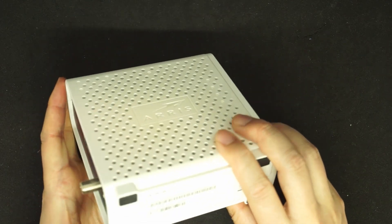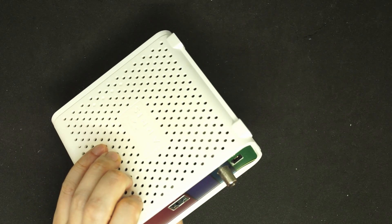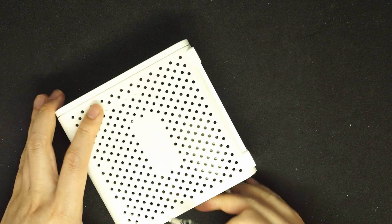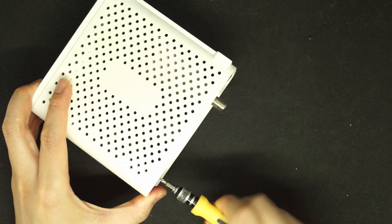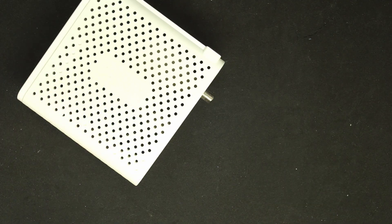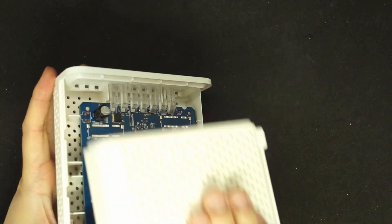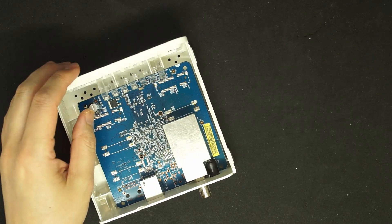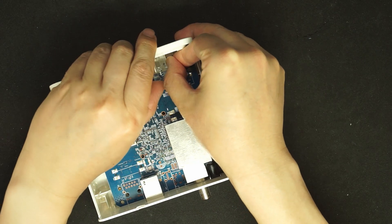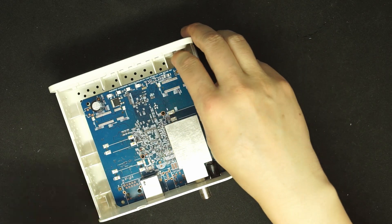First you need to cut a slide here and there's a screw here. You need to remove this light pipe and then take the board out.